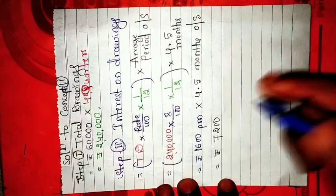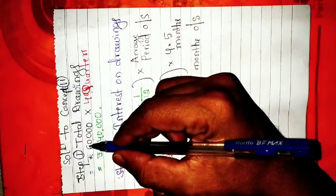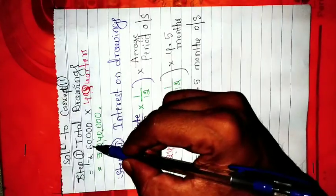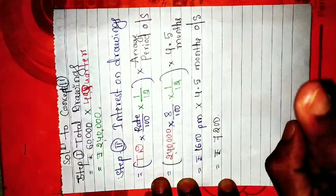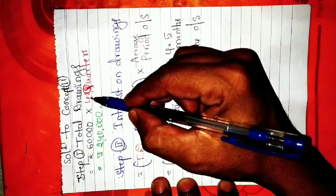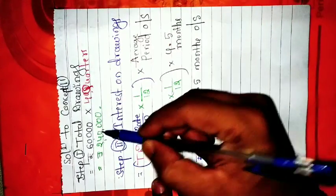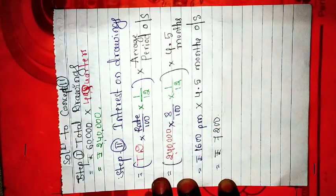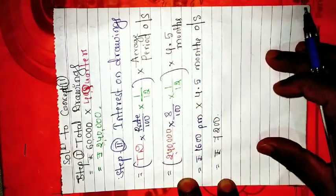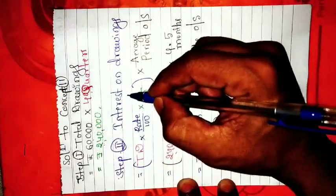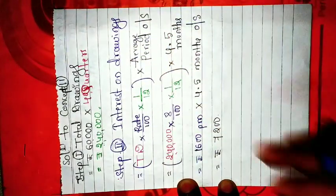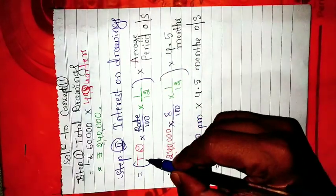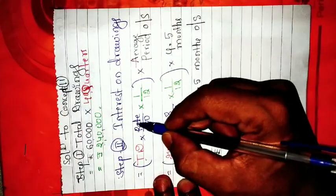Step 1: Calculate the total drawings. Total drawings in a year — sixty thousand per quarter multiplied by four quarters — equals rupees two lakh forty thousand.